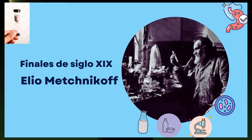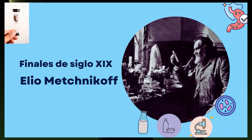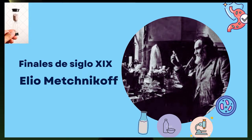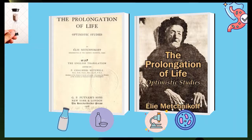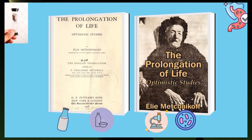A finales del siglo XIX y principios del XX, el científico ruso Eli Mechnikov observó que en las regiones de Bulgaria, donde el consumo de leches fermentadas era habitual, la longevidad se veía significativamente incrementada. También observó que los lactobacilos transformaban la lactosa en ácido láctico, sustancia que actúa contra las bacterias patógenas. Para 1907, con los resultados de sus observaciones sobre la senilidad, publicó el libro The Prolongation of Life.